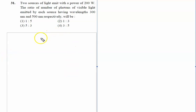Two sources of light each emit with a power of 200 watts. We need to find the ratio of the number of photons of visible light emitted by each source having different wavelengths.